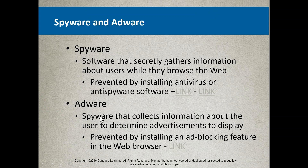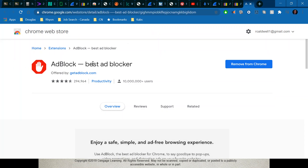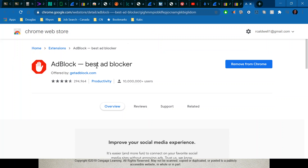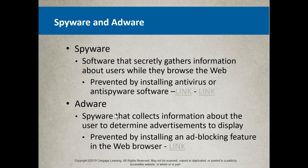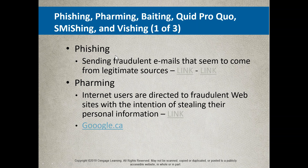Adware and spyware have a bit of a crossover — sometimes adware is trying to advertise something and collect information to sell you something, but sometimes it can have malicious intentions. You can help prevent this by installing an ad blocker extension in your Chrome browser. There are some downsides, like needing to disable it for the academic integrity module at Douglas College, but overall it's worth having.